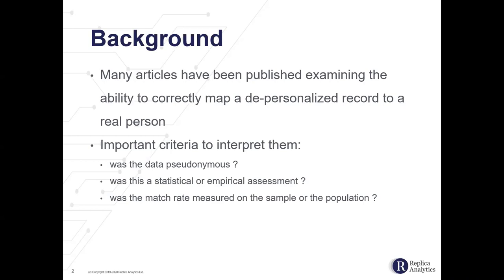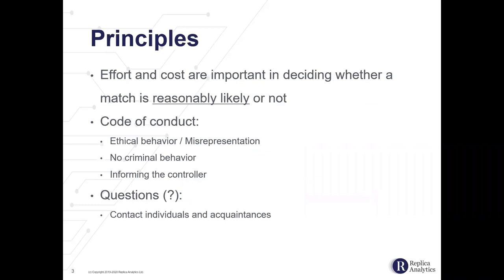Many published studies estimate sample risk, which is always highly inflated and misleading. In summary, a lot of this literature was done on datasets not properly depersonalized, did not match records with real people, and estimated sample risks — so you have to be very careful when interpreting or applying these results. An important principle: it's important to gather data on effort and cost. Even if records can be matched to individuals, this loses severity as effort and cost increase. Regulations consider identifiability a risk only if it is reasonably likely.